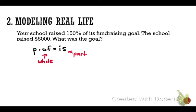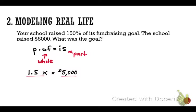Plug in: P becomes 1.5 (150% as a decimal). We don't know the goal, so of equals x. We do know the part they raised: $8,000, so is equals 8,000. Equation: 1.5 times x equals 8,000. Divide by 1.5 on both sides so x can be by itself.